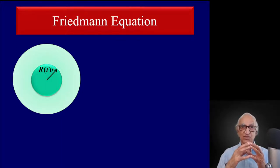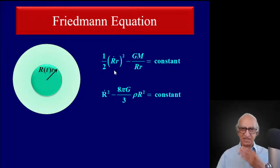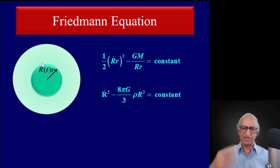In Newtonian theory, the equation of conservation of energy gives: half mv² minus the potential energy GM/r equals a constant. This simplifies to Ṙ² − (8πG/3)ρR² = constant, where ρ is the energy density of matter and radiation in the universe. That constant on the right-hand side is the total energy.